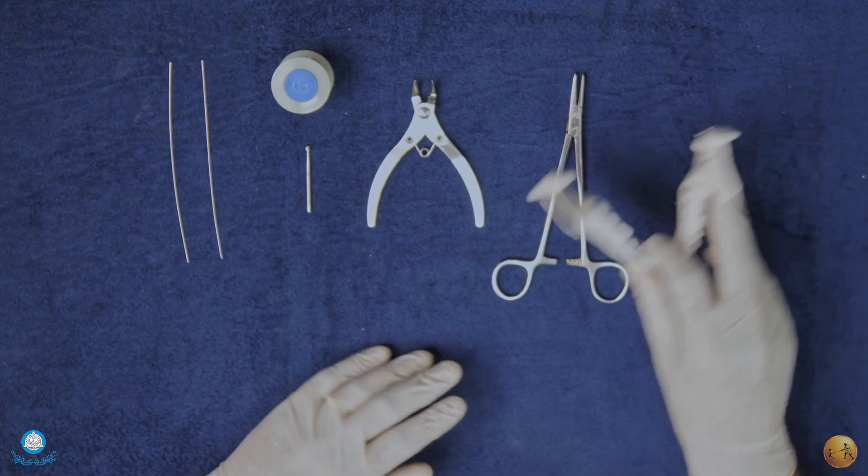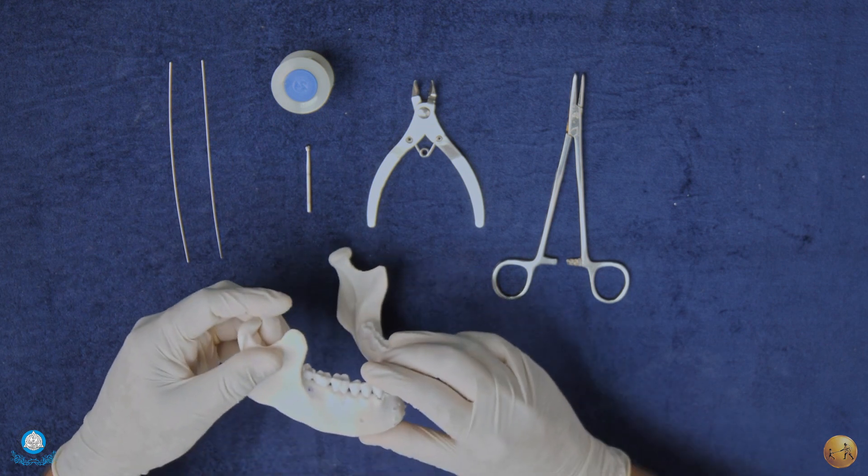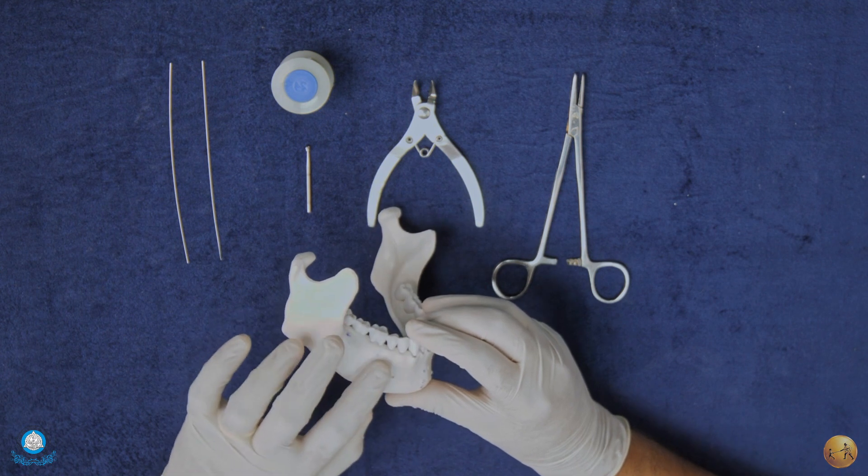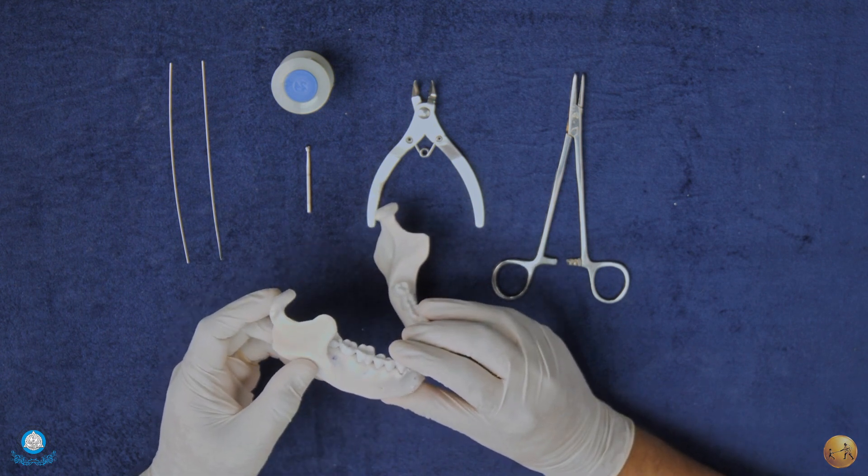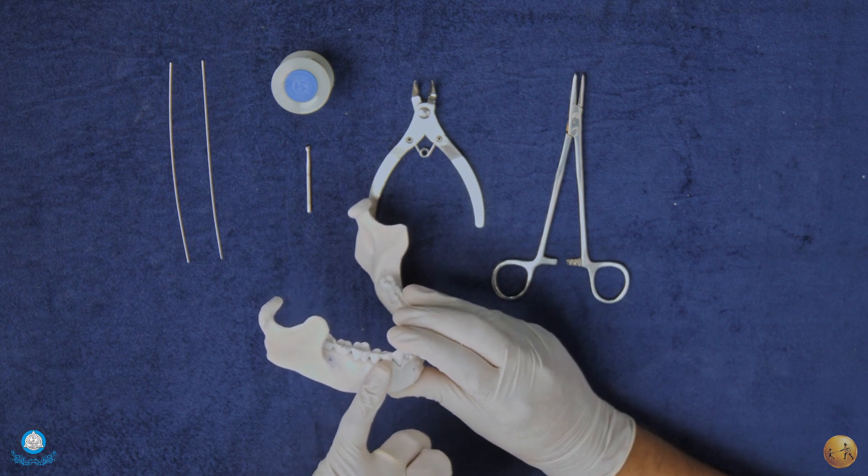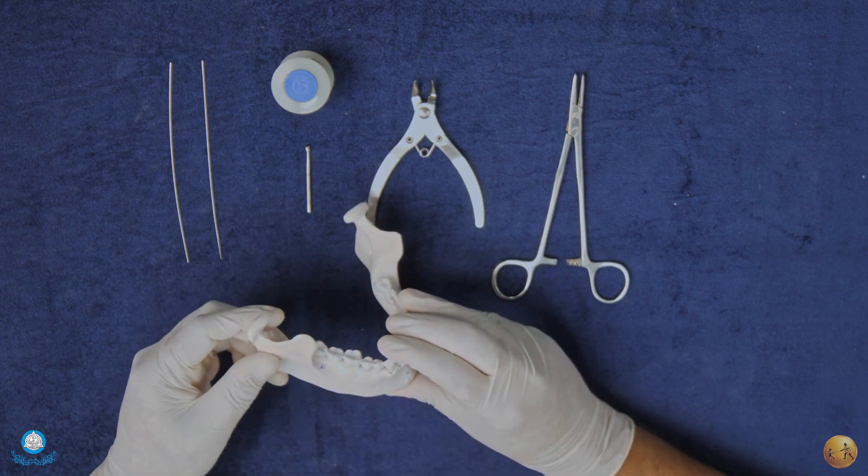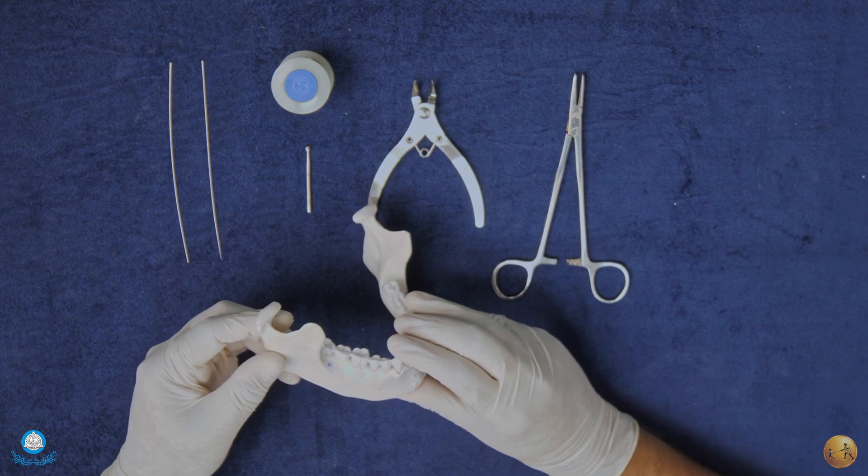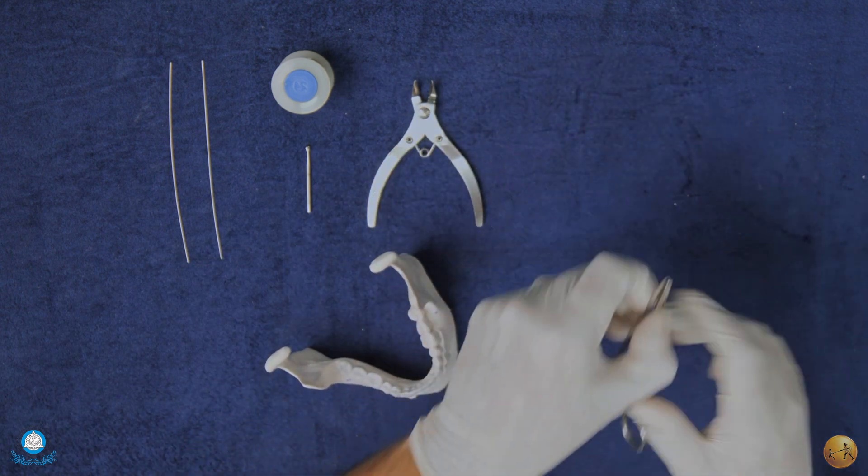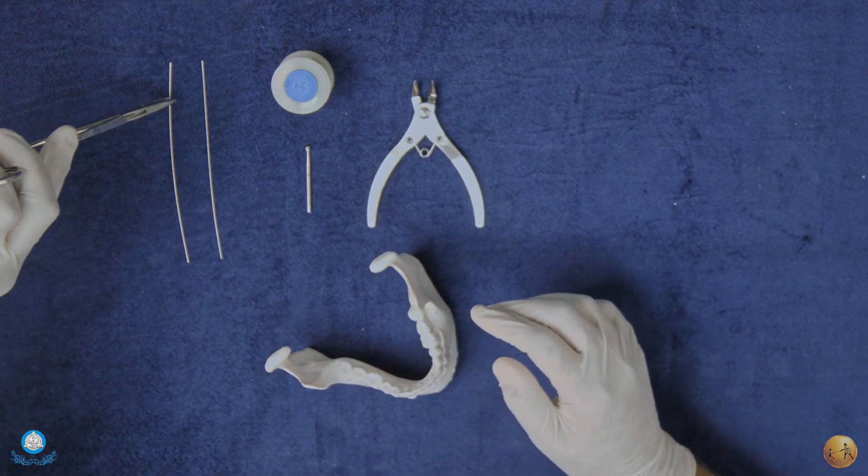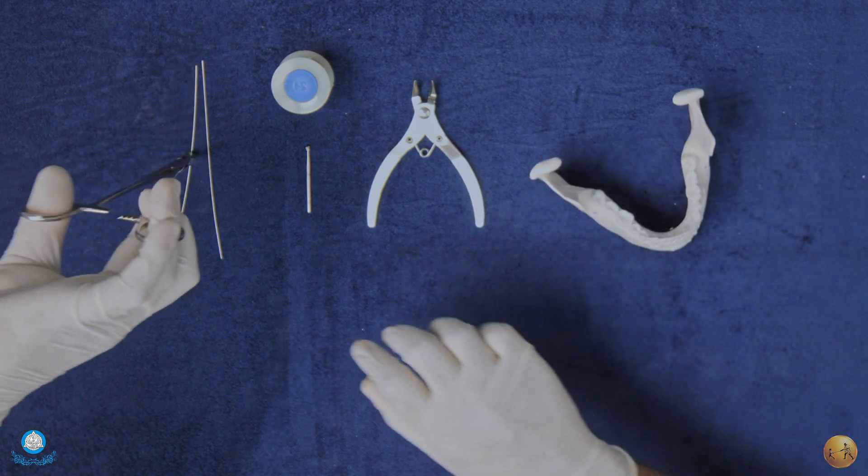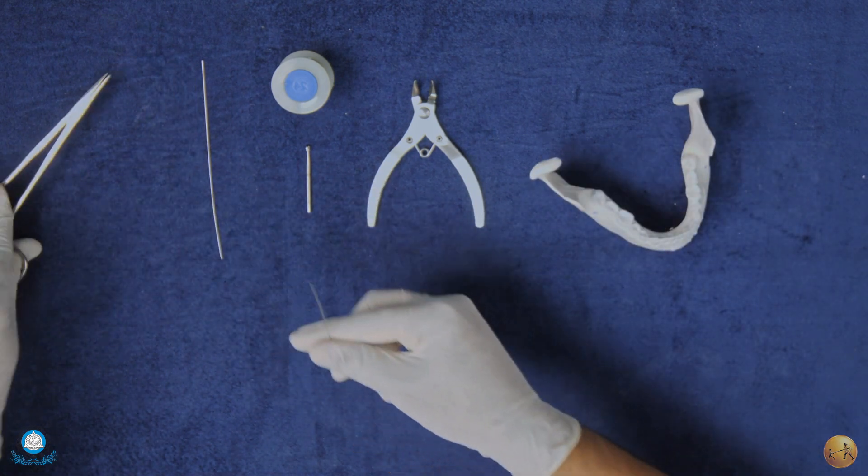Now this is a model mandible. We will be using the third quadrant as a possible model. If you notice, we have traced a fracture here with relation to the teeth, that is the first molar and the second premolar in this area. For us to actually do the eyelet wiring, we first have to achieve the actual eyelet. So how do we do that?